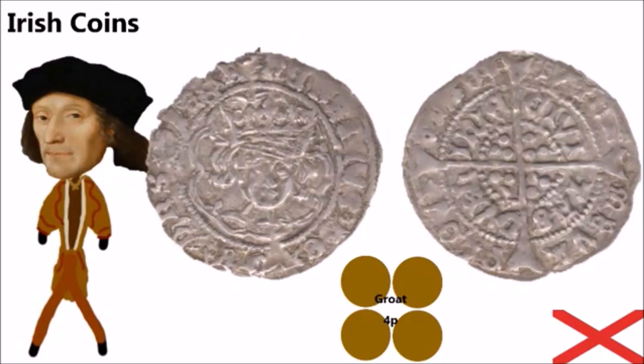The left of this coin displays King Henry VII and reads King of England and France. This is because the kings of England also considered themselves the kings of France due to inheritance, and this arguably lasted up until Queen Elizabeth II, though British monarchs no longer claim France as France is now a republic. The right of this coin displays a long cross. Ireland would then go on to use British coinage as it unified into Great Britain and then the United Kingdom, though it did still have a few unique designs of its own.